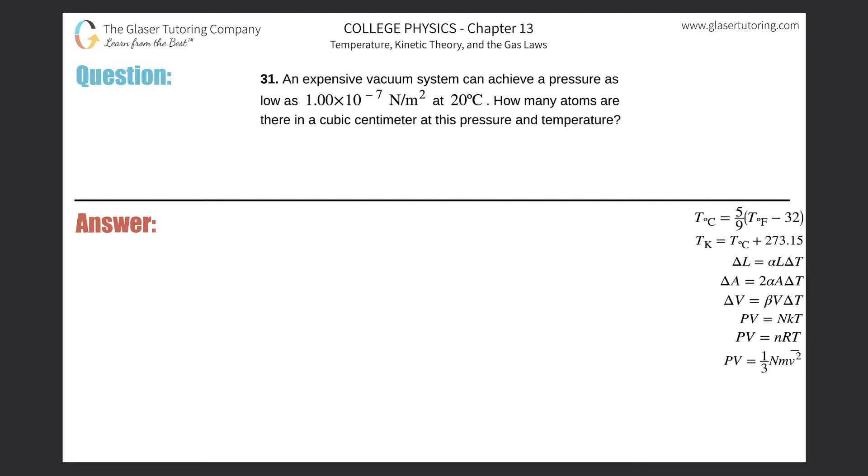Number 31. An expensive vacuum system can achieve a pressure as low as 1 times 10 to the minus 7 newtons per meter square at 20 degrees Celsius. How many atoms are there in a cubic centimeter at this pressure and temperature?